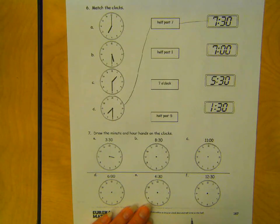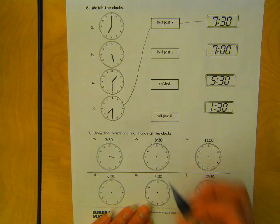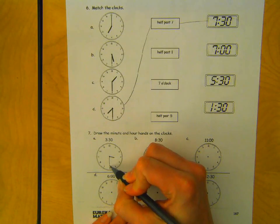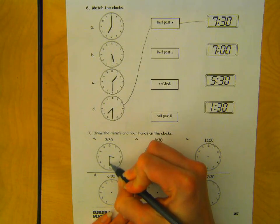And then my minute hand is my long hand. I need to show 30 minutes have gone by. So I know that that's pointing down to the 6 and it's my long hand.